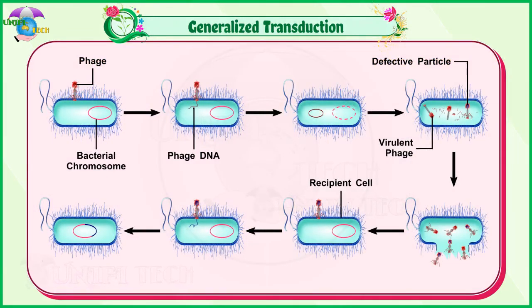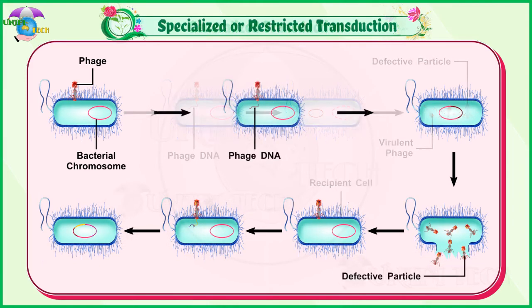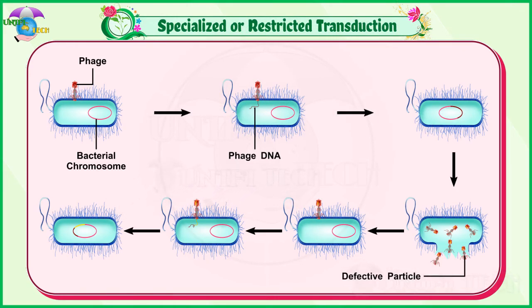One: Generalized transduction — the ability of a bacteriophage to carry genetic material of any region of bacterial DNA is called generalized transduction. Two: Specialized or restricted transduction — the ability of the bacteriophage to carry only a specific region of the bacterial DNA is called specialized or restricted transduction.